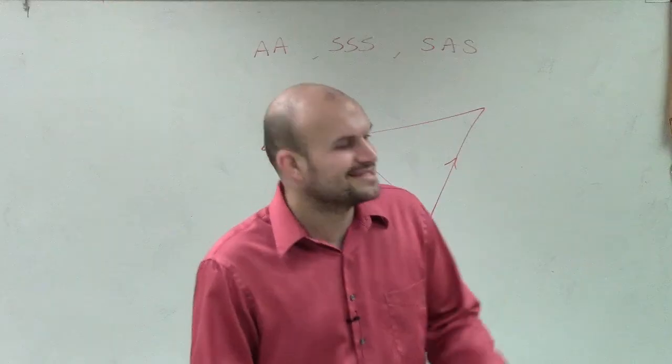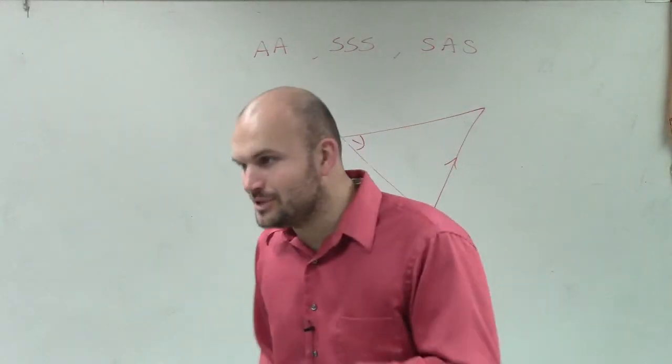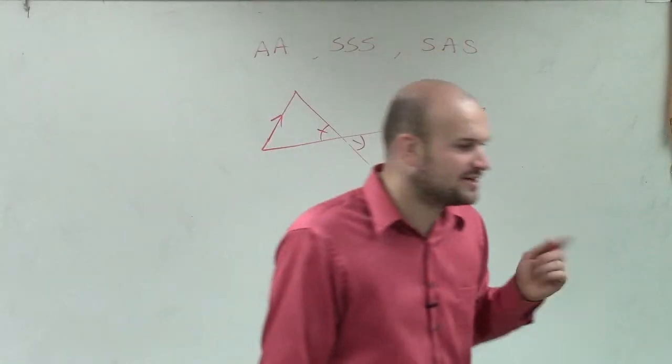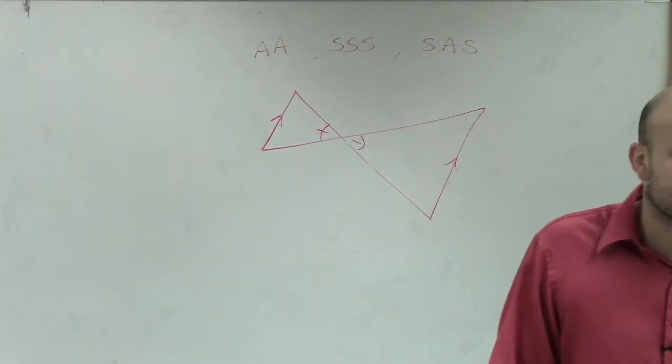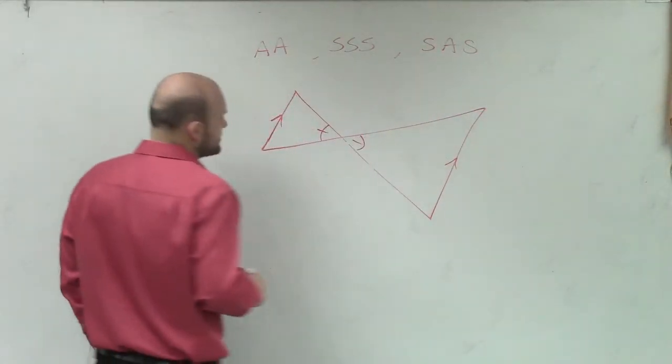Because hopefully, since the beginning of the year, I have drilled into you that when you have intersecting sides that do not share a side but share a vertex, we call them vertical angles. And vertical angles are equal in measurement, right? So we can say that these two angles are congruent.